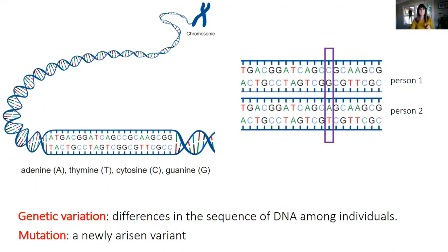In this slide, you can see a very simplified way to represent genetic variation. We have one of the chromosomes with the double helix. The bases that form the DNA strands are adenine, which always pairs with thymine, and cytosine, which pairs with guanine — so A, T, C, G. And if we compare two people, we can see that mostly they have the same base pair all across, but at some points in the genome, we will also see different combinations of the bases, and this is the genetic variation.